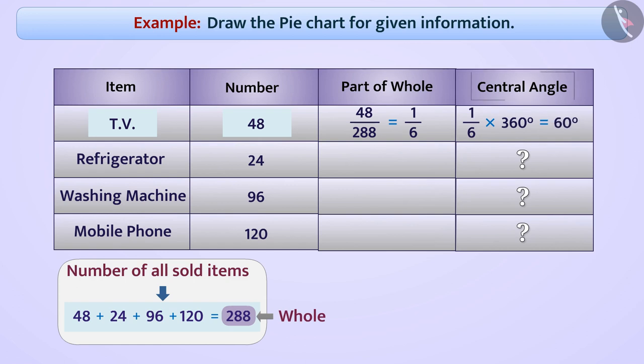So what will be the central angle to represent the number of refrigerators? Think, think! Absolutely right! Since the number of refrigerators is 24 divided by 288, part of the whole, that is, 1/12 part, hence the central angle representing it will be 1/12 part of 360, that is, 30 degrees.